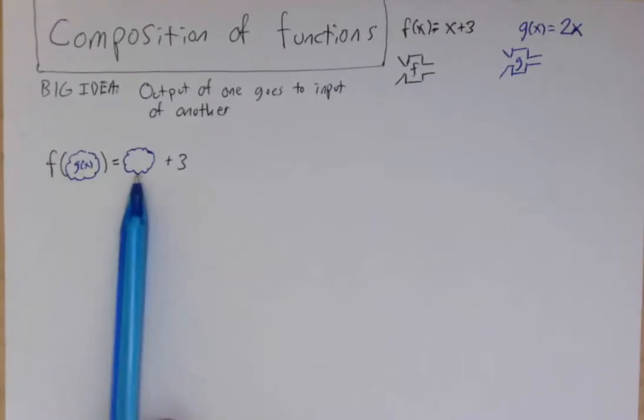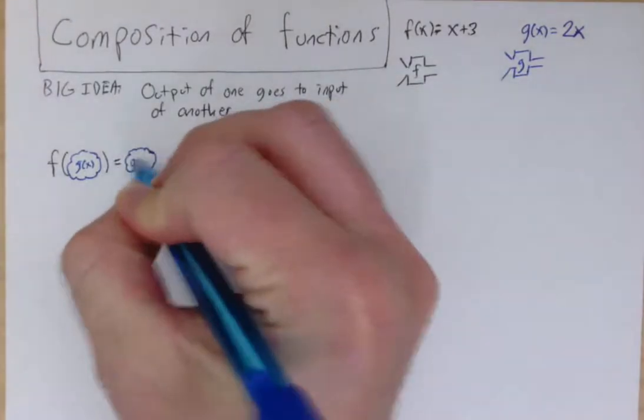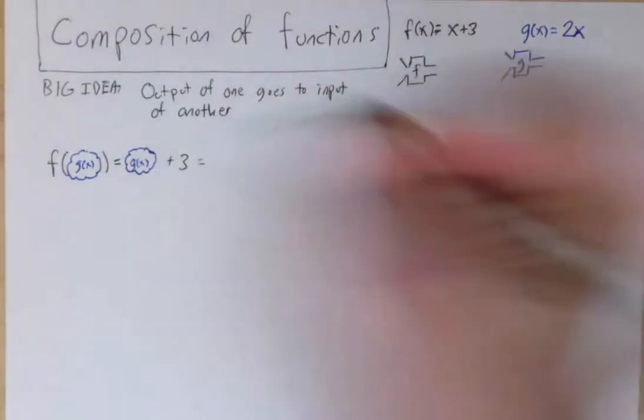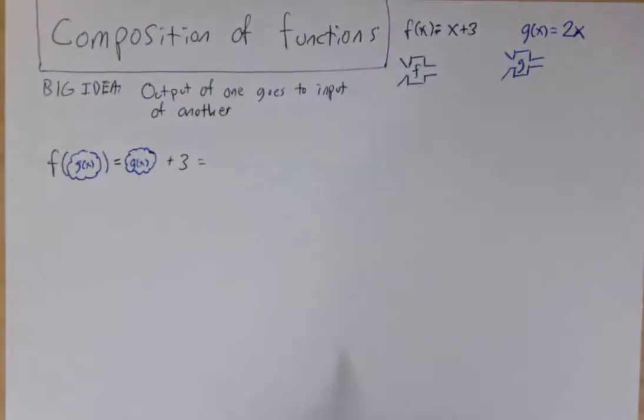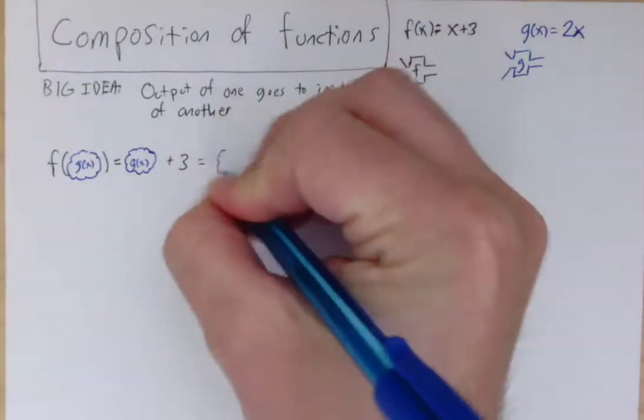And rather than have an x here, which is the ordinary spot for my f function for the input, I can substitute g of x. And then if you were going to expand that the rest of the way, g of x is just the same as 2x, so that would be 2x plus 3.